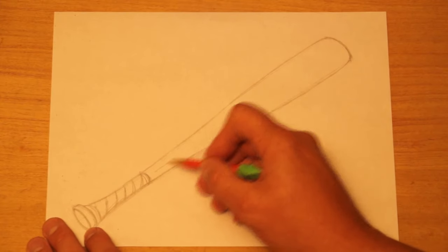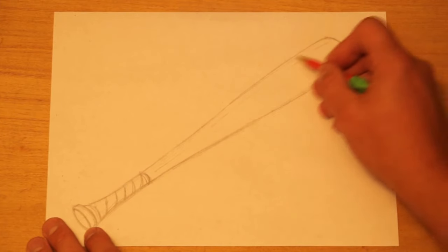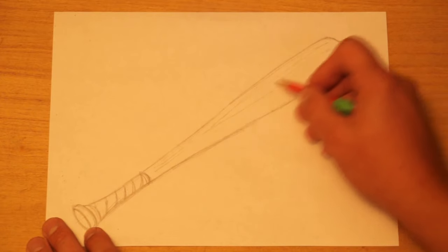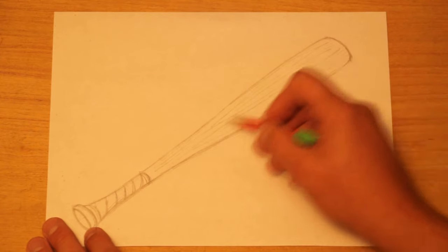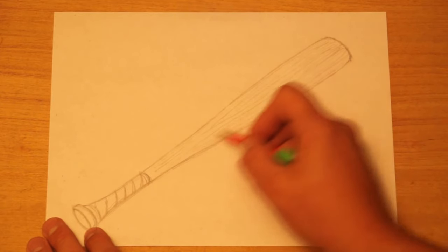You can also, if it's a wooden bat, you can add the wood grain. Some of the bats have markings on them that tell what brand they are. You can do those as well. And any kind of details that you add will help enhance the overall look of the bat and make it look more like a real one.